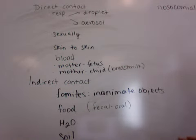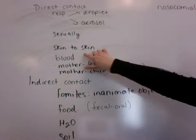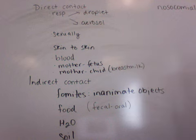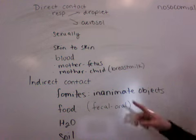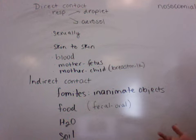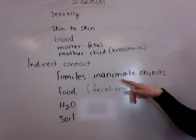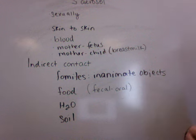We also have sexual transmission and skin-to-skin contact. Remember, you could do knuckles or high-five someone without sexual contact but still come in contact with a potential pathogen. Blood transmission and mother-to-fetus transmission can include childbirth, placental transmission, or mother to child via breast milk — those are all examples of direct contact.